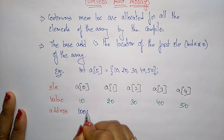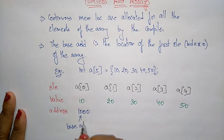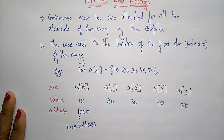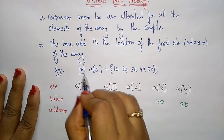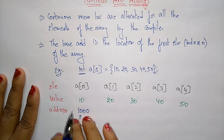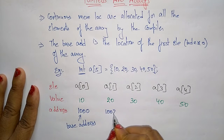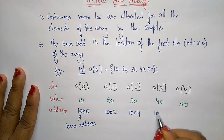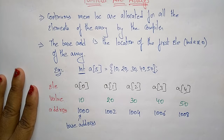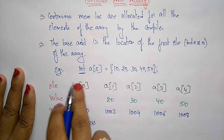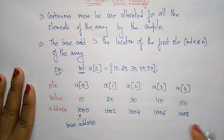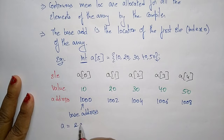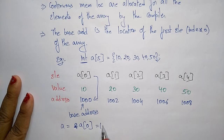Suppose the base address is 1000 — this is the starting address of the array. Because we are using the int data type, the size of each element occupies two bytes of memory. So the next address is 1002, then 1004, 1006, and 1008. So with integer data type, it occupies two bytes of memory for each value stored.